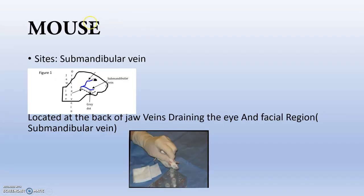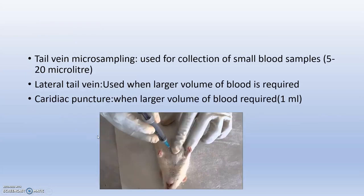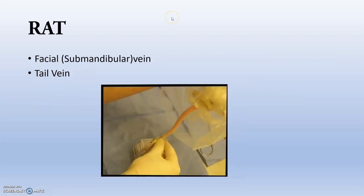In the case of mouse, the main site used is the submandibular vein, located at the back of the jaw — veins draining the eye and facial region. Tail vein micro-sampling is normally done; the lateral tail vein and cardiac puncture are also used. In the case of rats, the facial or submandibular vein or tail vein is used.